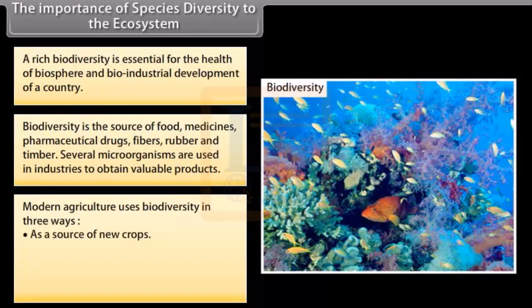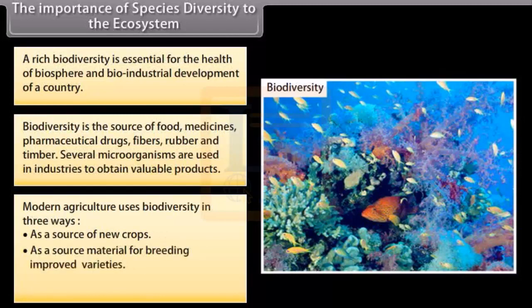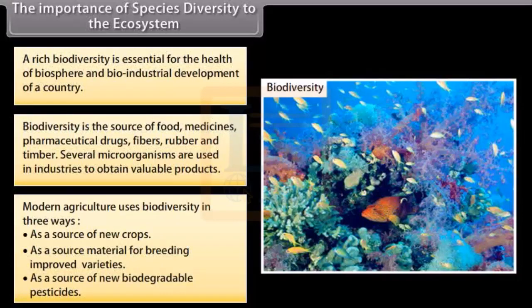Modern agriculture uses biodiversity in three ways: as a source of new crops, as a source material for breeding improved varieties, and as a source of new biodegradable pesticides.